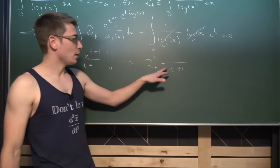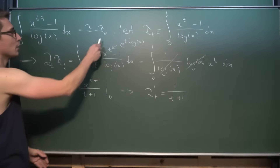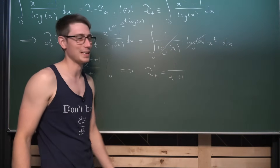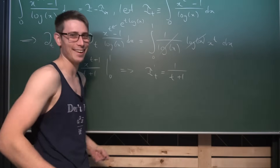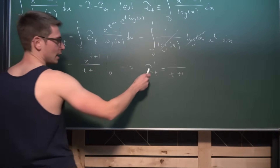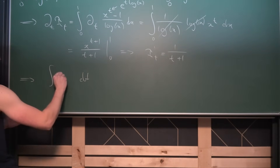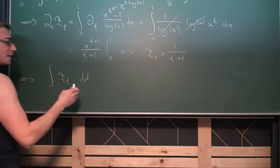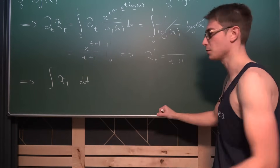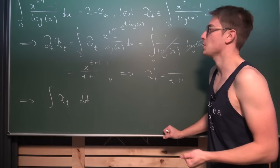To recover i(t) from i'(t) = 1/(t+1), we integrate with respect to t. We need upper and lower bounds — we can use the fundamental theorem of calculus by plugging in initial values rather than solving for a constant of integration.